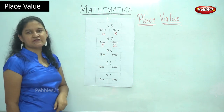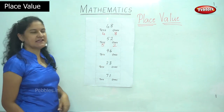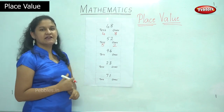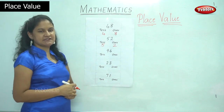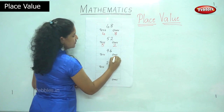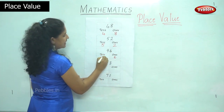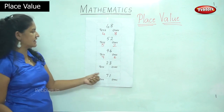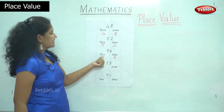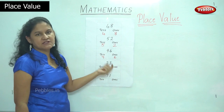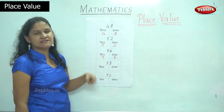What number do I have in the 1s place? Can anyone tell me what number is there in the 1s place? Yes, it is number 6. So I have 6 in the 1s place and I have 9 in the 10s place. So I read the number as 9 10s and 6 1s, or 96.